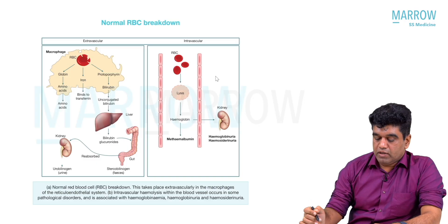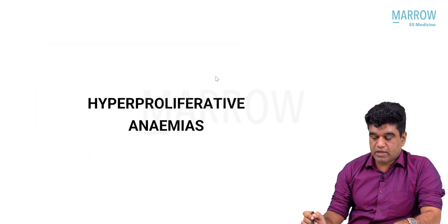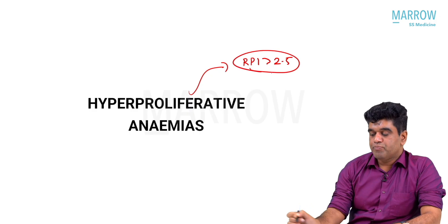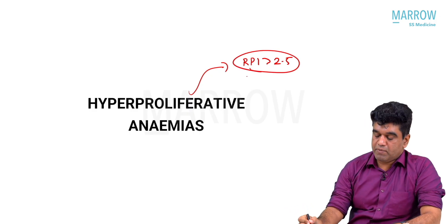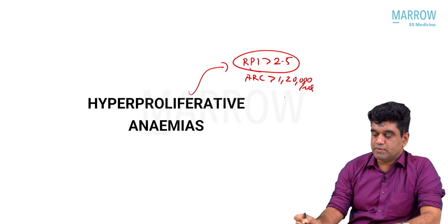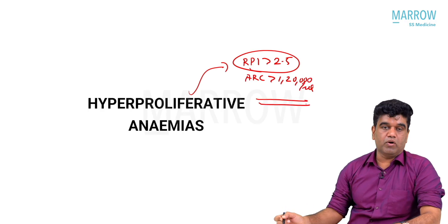From the world of hypoproliferative anemia, we are moving into hyperproliferative anemia. What does hyperproliferative anemia mean? If you are checking your reticulocyte production index, your RPI has to be more than or equal to 2.5 to say that it is hyperproliferative anemia, or in terms of absolute reticulocyte count, more than or equal to 1,20,000 per microliter is called hyperproliferative anemia.